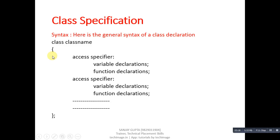Inside the curly braces, there are two blocks, each showing an access specifier. Inside each access specifier, we can declare variables and functions. We can define any number of variables and functions inside a class. Finally, we use a semicolon for the termination of the class syntax.